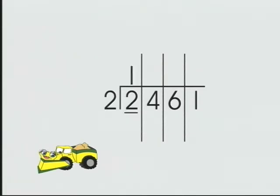2. There is one group of 2 in the thousands column. 2, 4. There are two groups of 2 in the hundreds column. 2, 4, 6.